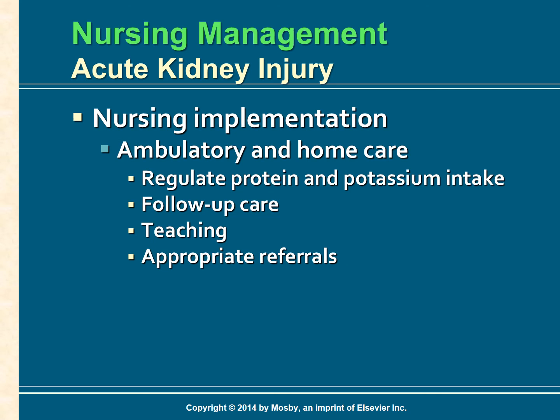Ambulatory and home care: recovery from AKI is highly variable and depends on the existence of other organ system failures, the general condition and age of the patient, the length of the oliguric phase, and the severity of nephron damage. Protein and potassium intake should be regulated in accordance with kidney function. Follow-up care and regular evaluation of kidney function are necessary. Teach the patient the signs and symptoms of recurrent kidney disease and emphasize measures to prevent recurrence of AKI. The long-term convalescence period of 3 to 12 months may cause psychosocial and financial hardships; make appropriate referrals for counseling. Perform skin care to prevent pressure ulcers, and provide mouth care to prevent stomatitis, which develops when ammonia in saliva irritates the mucous membrane.